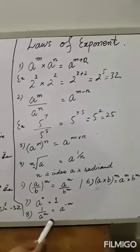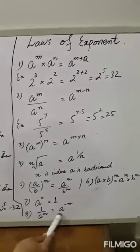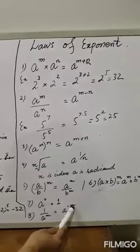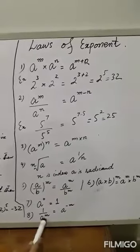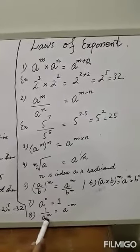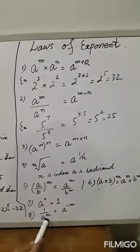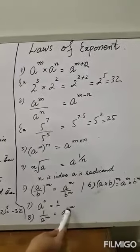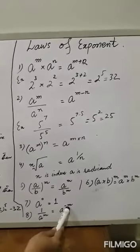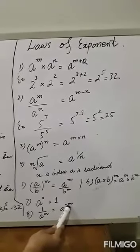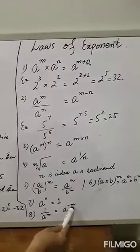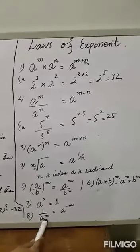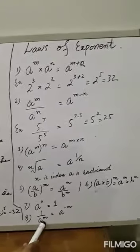The last law is: 1 divided by A raised to power M equals A raised to power minus M. A positive power in the denominator moves to the numerator and becomes negative.